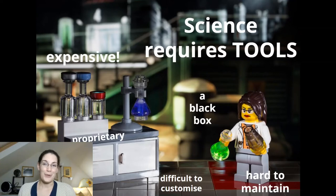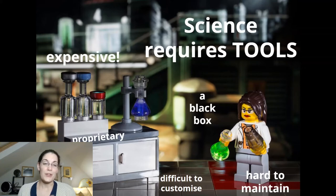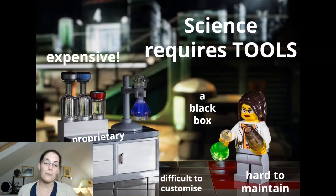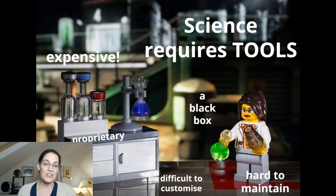So why open hardware? Science requires tools — experimental science certainly does. Many of those tools are expensive and often proprietary, which not only means they can be difficult to understand, with something of a black box in the underpinning workings of the machines, but also that not having full plans available means they can be hard to maintain and repair. This is particularly challenging in places where supply chains and access to service engineers is restricted, and they can be difficult to customise and to source as well.